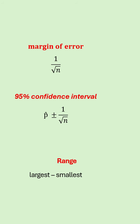In inferential statistics the margin of error is given as 1 over the square root of n, and the 95% confidence interval is given as p hat plus or minus 1 over the square root of n. The range is found by taking the smallest value from the largest.